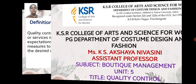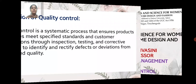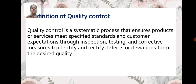Definition of quality control: Quality control is a systematic process that ensures products or services meet specified standards and customer expectations through inspections, testing, and corrective measures to identify and rectify defects and deviations from the desired quality.